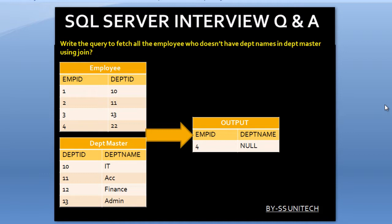Here we have two input tables: first is Employee and second is Department. In the Employee table we have two columns: Employee ID and Department ID. In the Department master table we have Department ID and Department Name. We want to fetch those employees where Department ID is not available in the Department master table, but we cannot use the IN operator or NOT EXISTS — we have to use a join.